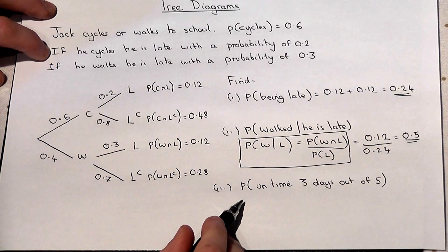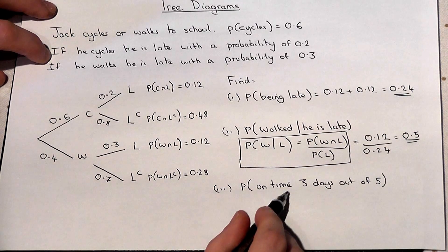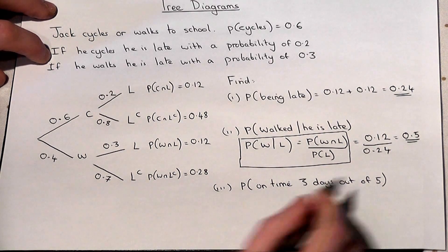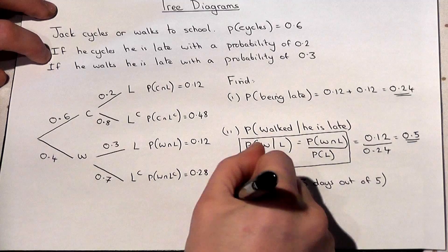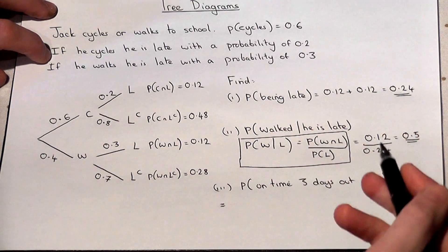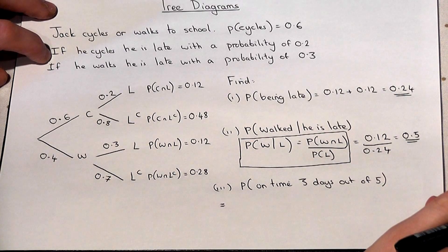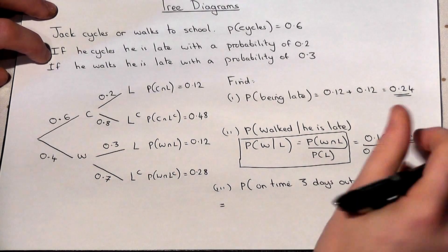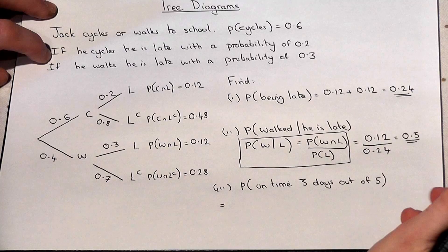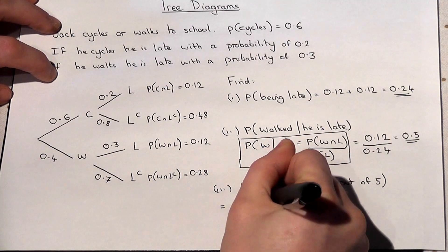Part 3. Suppose that we want to find the chance he is on time three days out of five. Well this means that he must be on time, on time, on time and then late and late. But there's all the combinations within that as well. He could be late for the first two days or for the middle two days. So this is where we use the binomial distribution.